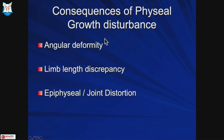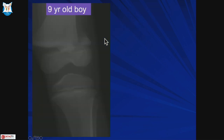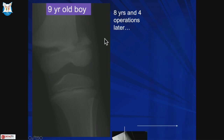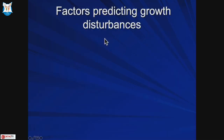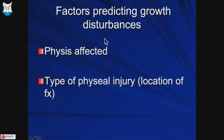If you have a physeal disturbance you can get angular deformity, limb length discrepancy, joint distortion, or a combination. Here is a nine-year-old boy who wasn't treated very well - after eight years he is short and has significant deformity. To correct this you need deformity correction as well as lengthening. It's better to treat it right the first time.